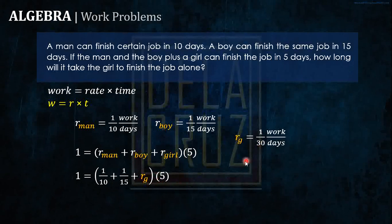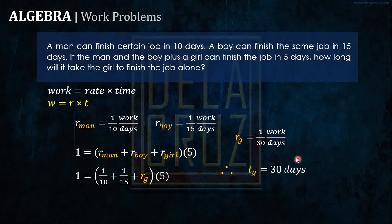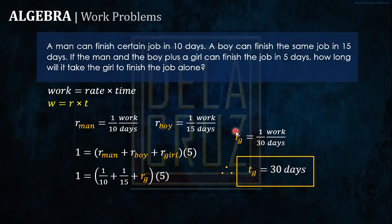We solve for the rate of the girl here. The time for the girl to finish the job alone is 30 days — that is just the reciprocal of her rate. Don't use one-over-time directly in the setup, as it makes the calculator solution harder. Just get the rate, then take the reciprocal. Therefore, the time for the girl to finish the job is 30 days.